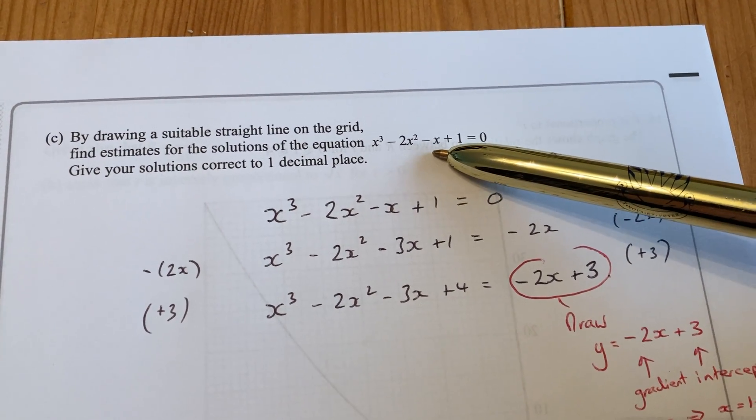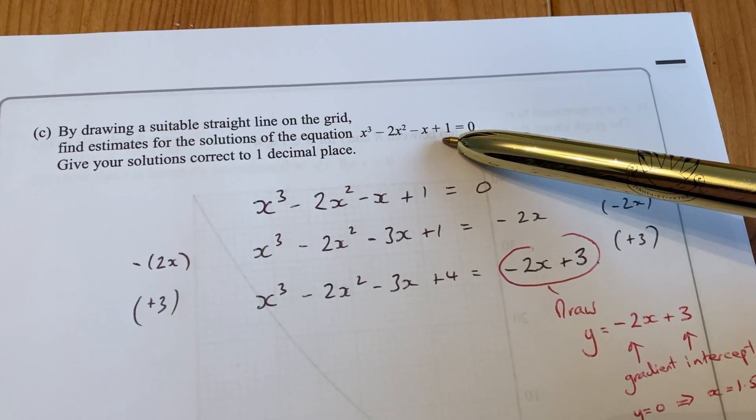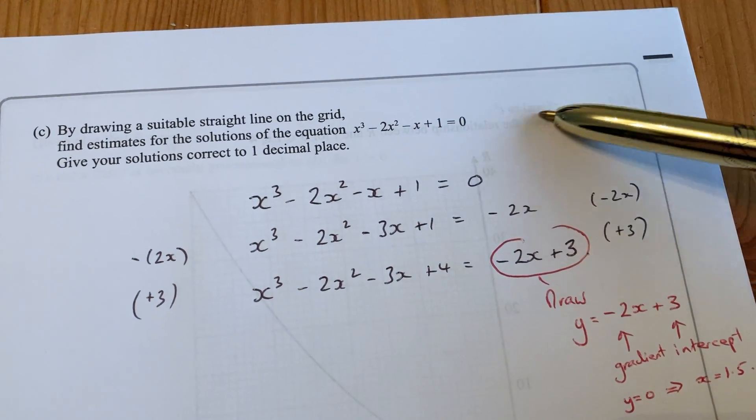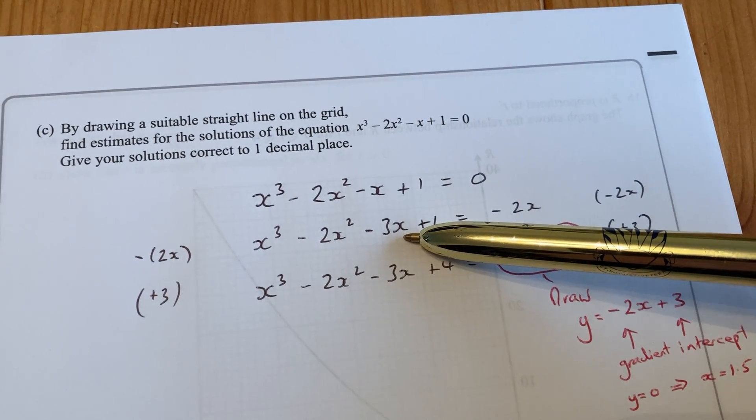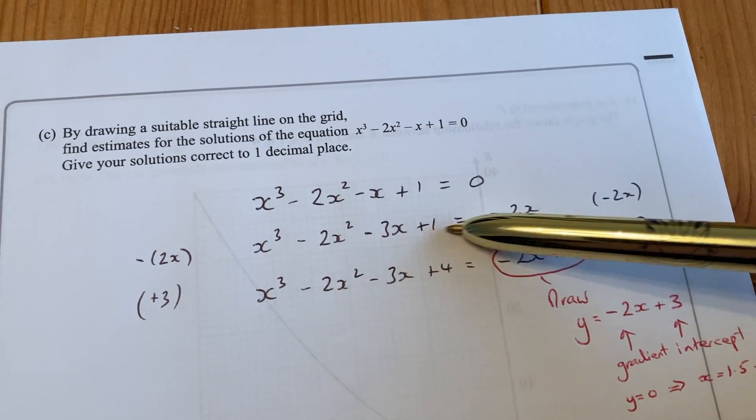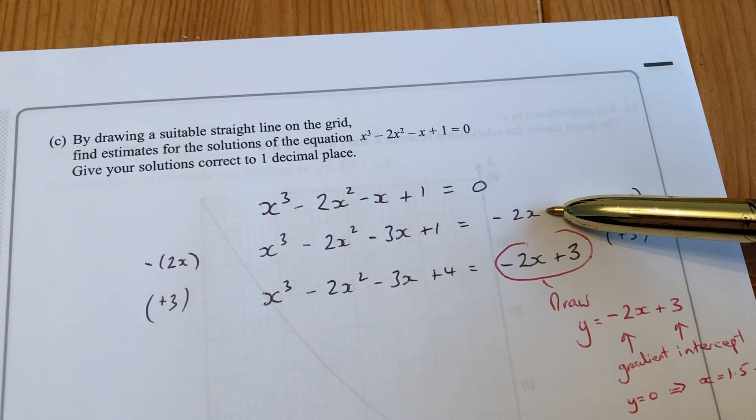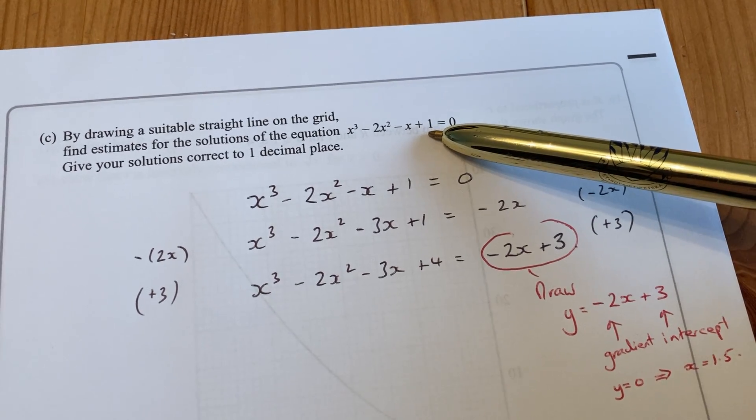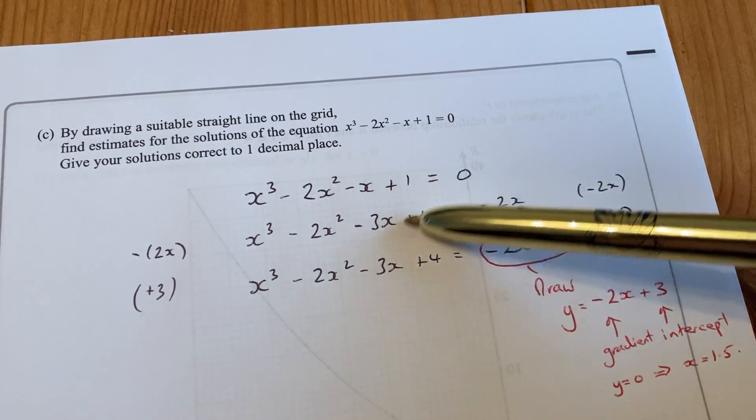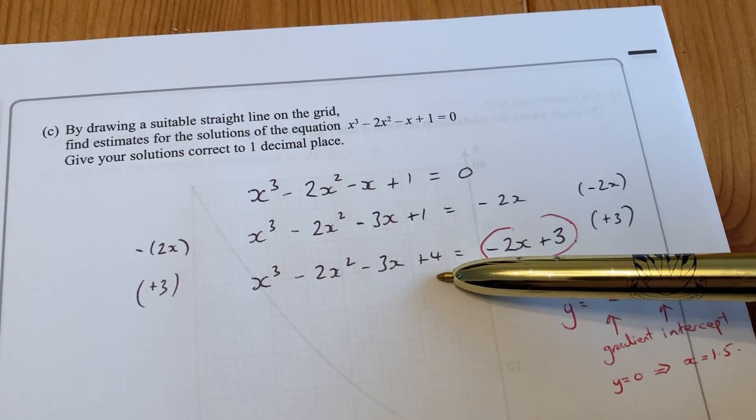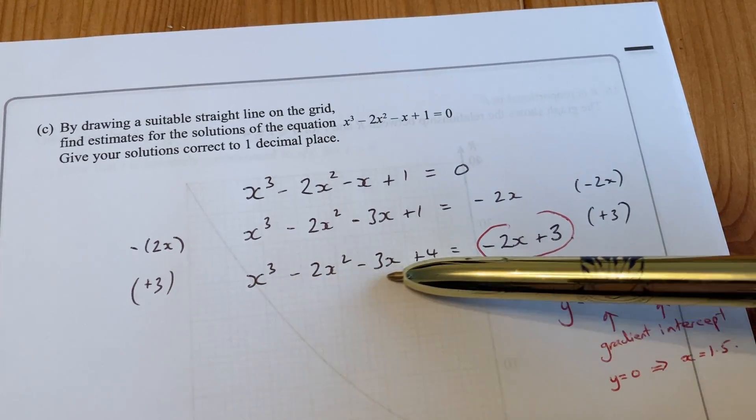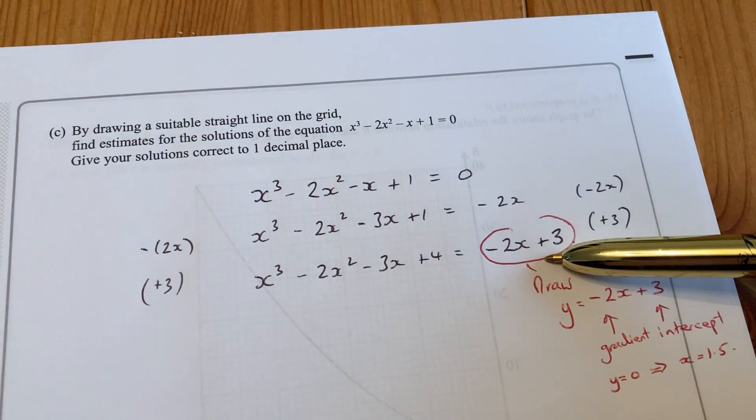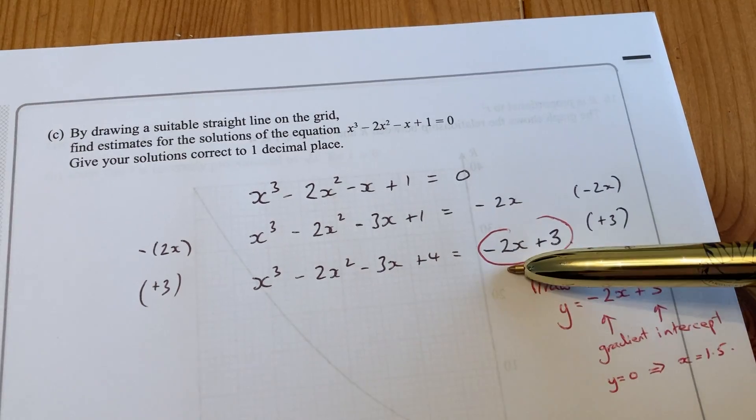We get -2x here because I've taken 2x away from both sides. And to get +4 on the end, I need to add 3 to both sides as well. So I create the graph we've just drawn here, and to do that I needed to subtract 2x and add 3 to both sides of this equation.